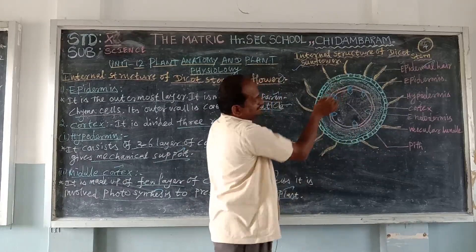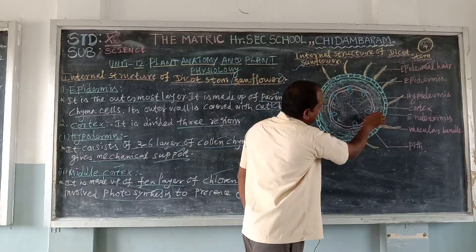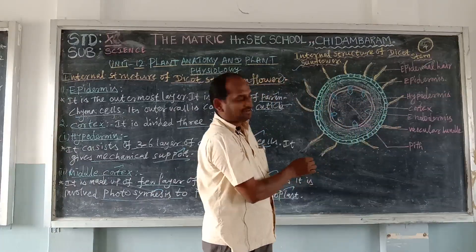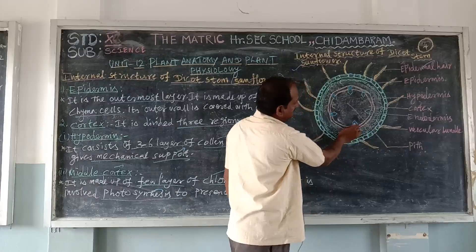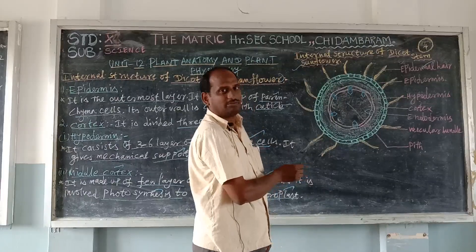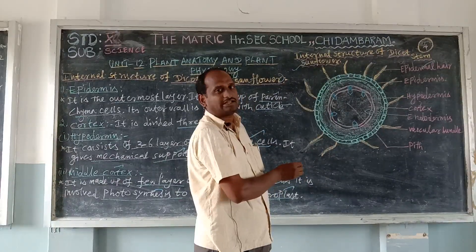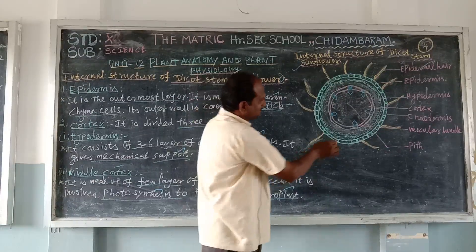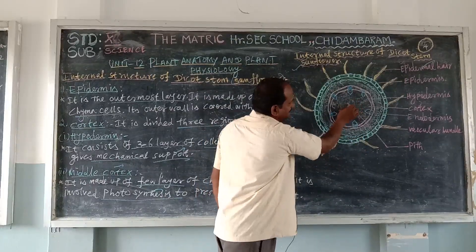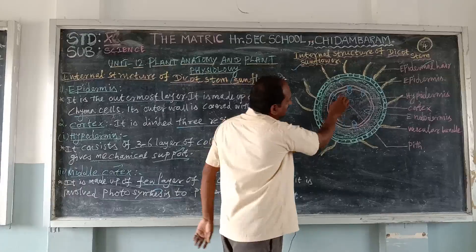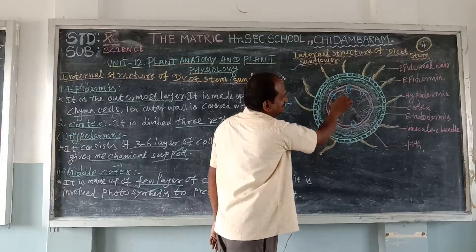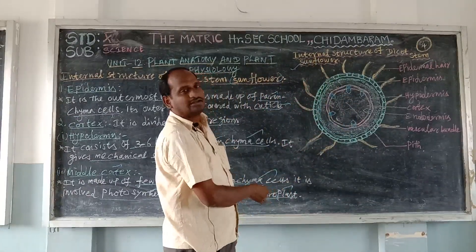The arrangement of xylem and phloem is surrounded by the endodermis. Epidermis is the outer boundary; endodermis is the inner boundary. Next is the vascular bundle — xylem and phloem together form the vascular bundle. Xylem conducts water and phloem conducts food. Finally, the center part is the pith, which has a large intracellular base-like structure. This completes the structure of the dicot stem.